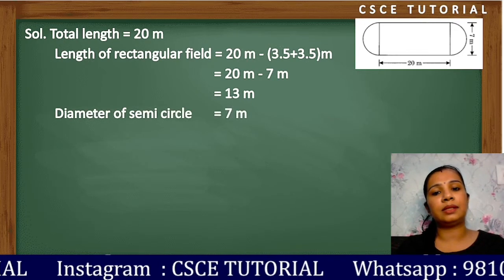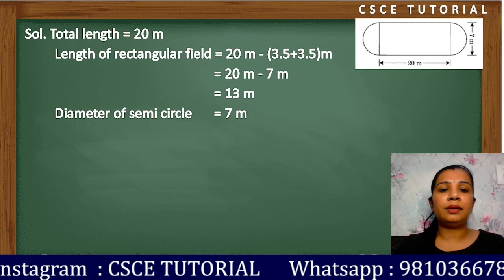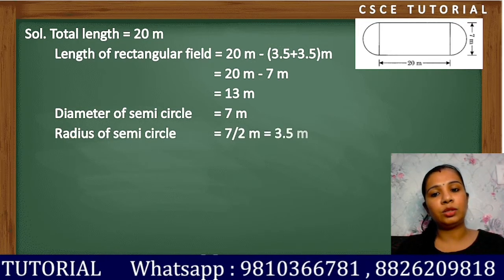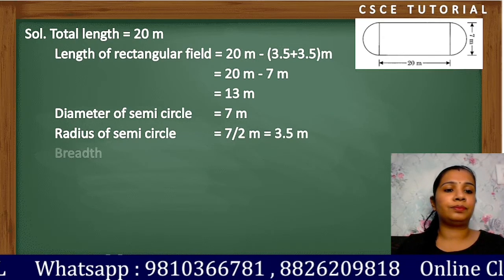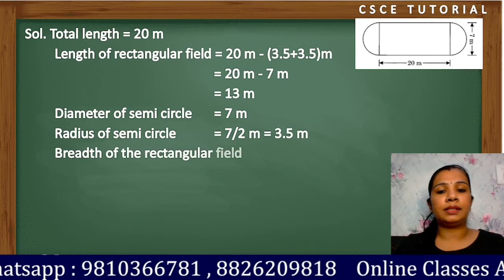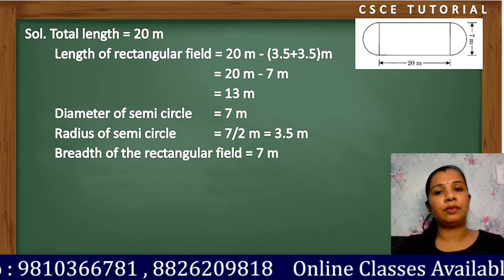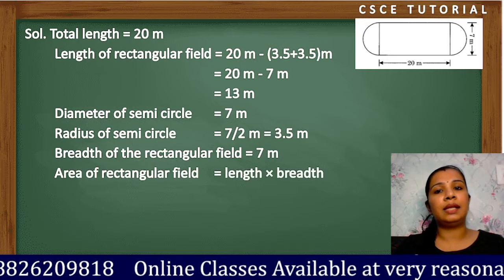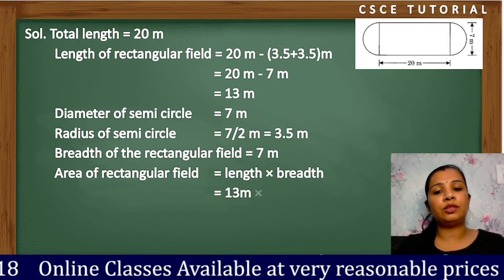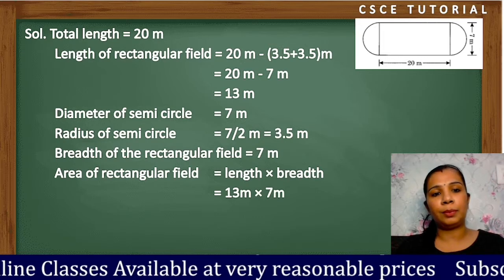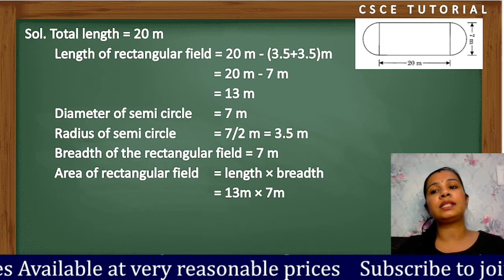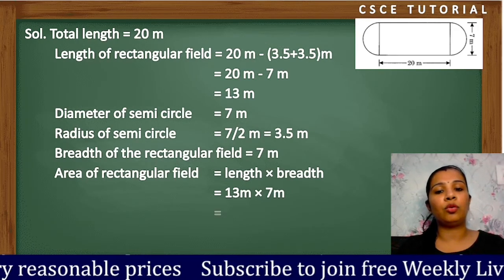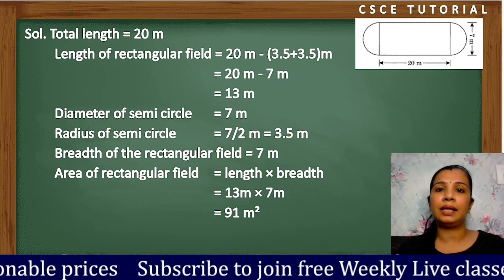Diameter of the semicircle is 7 meters, so radius = 7 ÷ 2 = 3.5 meters. The breadth of the rectangular field equals 7 meters. The area of the rectangular field = length × breadth = 13 × 7 = 91 square meters.